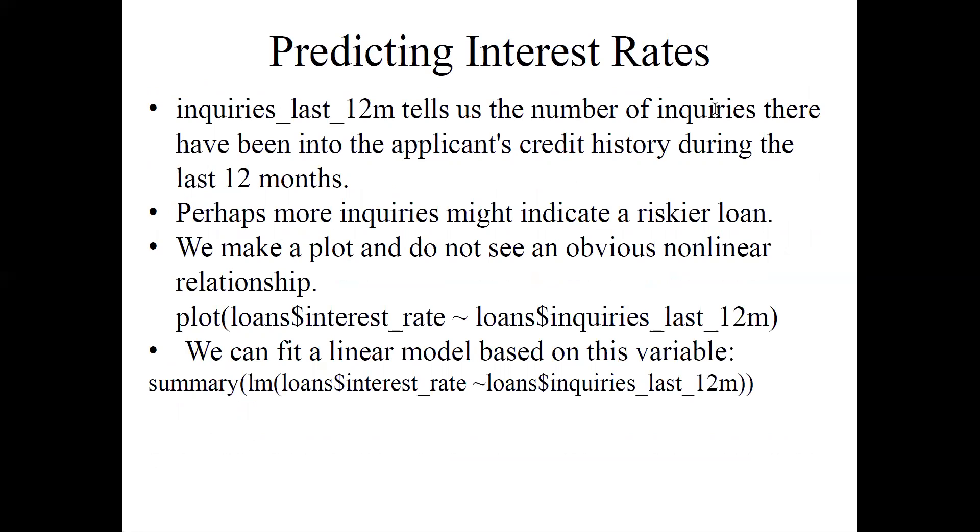We've got over 50 possible cause factors to try to understand this. Let's consider one of them: inquiries_last_12m. That tells us the number of inquiries there've been into a particular applicant's credit history during the last 12 months. Usually people with a lot more inquiries tend to—sometimes that indicates a riskier loan.